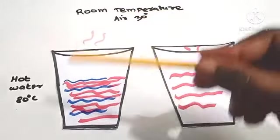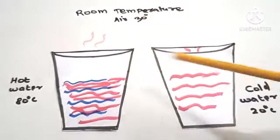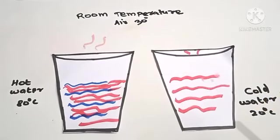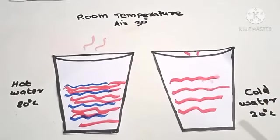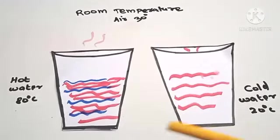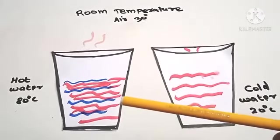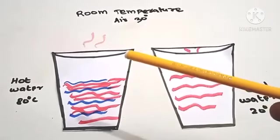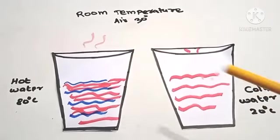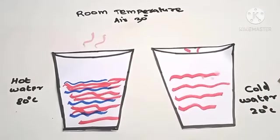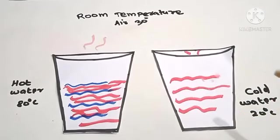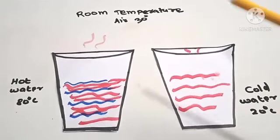Consider system A, system B, and system C. System A is air at room temperature, 30 degrees Celsius. System B is a glass filled with hot water at 80 degrees Celsius. System C is a glass filled with cold water at 20 degrees Celsius.